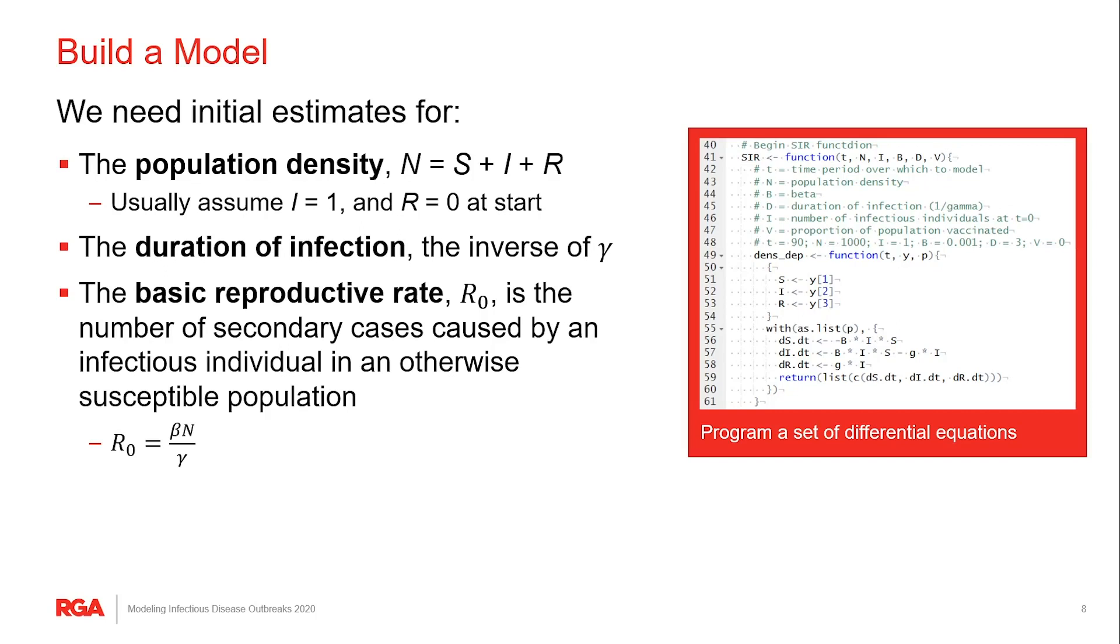We estimate gamma and beta from prior knowledge. So gamma is, like I said earlier, just the inverse of the duration of the infection. And that's pretty easy to measure at the beginning stages of a disease outbreak.